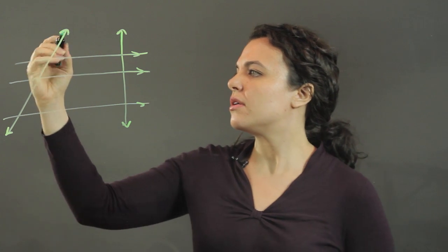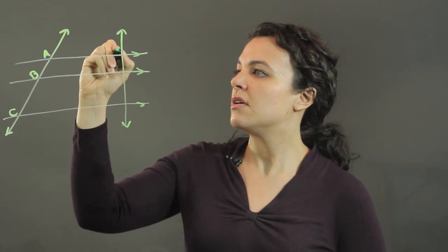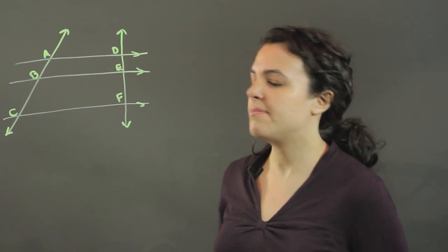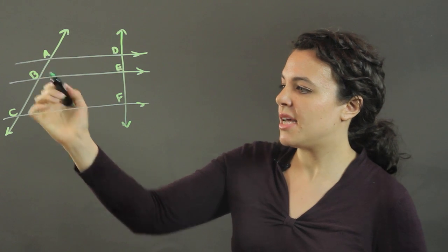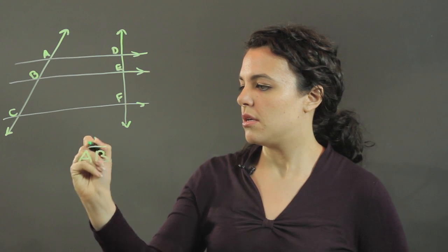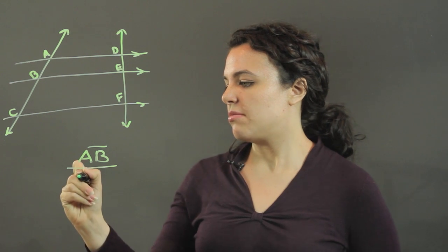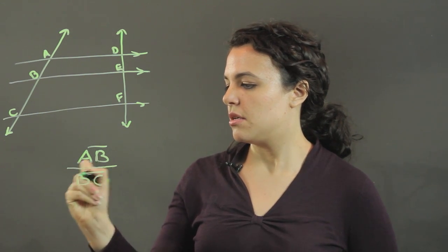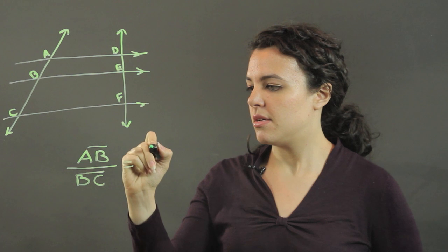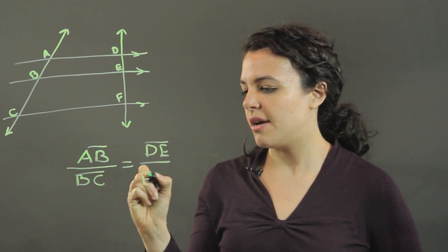So let's say that this is point A, this is B, this is C. Here we have D, E, and F. What that means is that segment AB is to segment BC as segment DE is to segment EF.